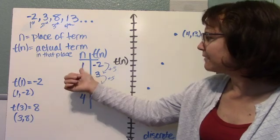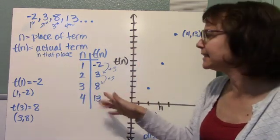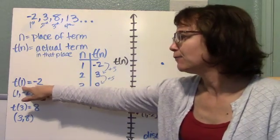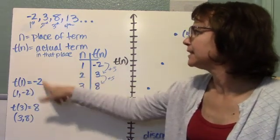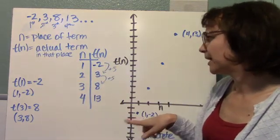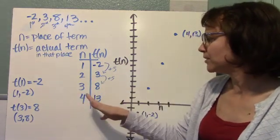We can see this idea of arithmetic in the table. We can also see it in the graph. So if I were to plot these, if I have n in my x-axis and t of n on my y-axis, this is the point 1, negative 2. So when t of 1, in the first place, is equal to negative 2. So 1, negative 2 is a point on my graph.